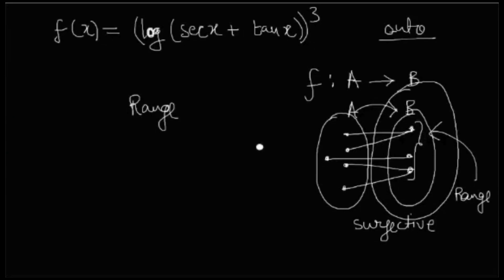You get this range set. If by any chance, the range becomes equals to... sorry, range becomes equals to codomain, then it's surjective. Why?